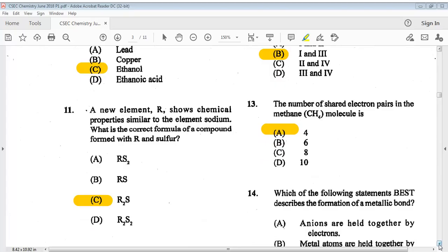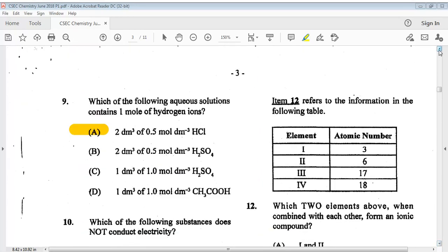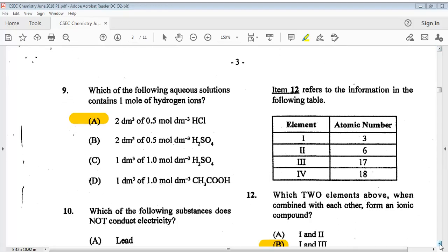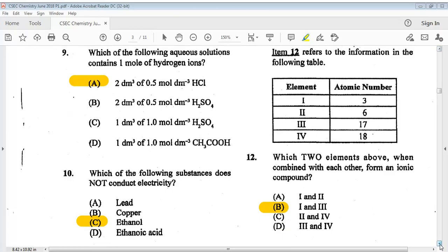Question ten: which of the following substances does not conduct electricity? The answer is C, ethanol. Question eleven, a new element R shows chemical properties similar to the element sodium. What is the correct formula for compound formed with R and sulfur? The answer is C, R2S. Let's go on to number twelve.